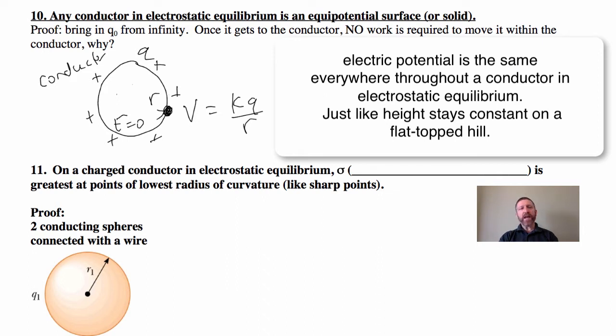So the potential is the same everywhere on that. Now what this allows us to do is to prove on a charged conductor in electrostatic equilibrium, sigma, the surface charge density, is greatest at points of lowest radius of curvature, like points. And this is how lightning rods work. We can get the surface charge density so high at the end of a pin that the charge just wants to jump off. The field is so strong there. So here's our proof of that.